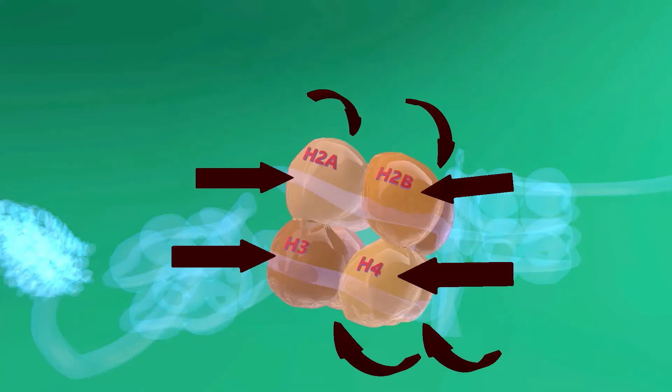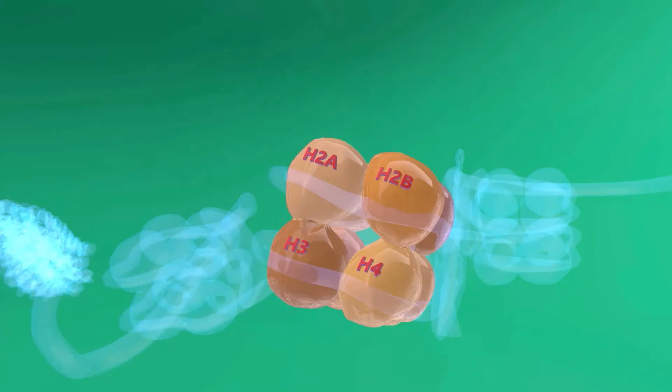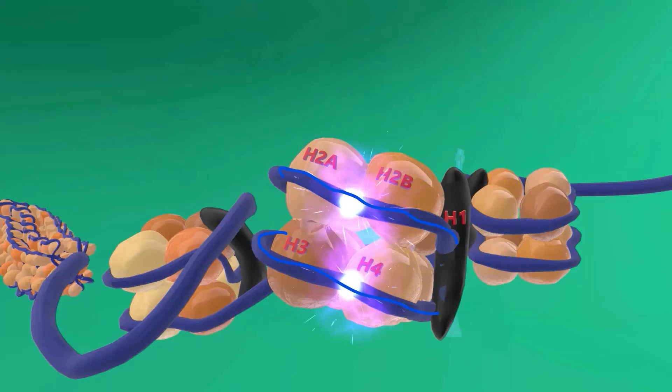What happens is DNA loops about two times around each of these histone octamers, and this is known as a nucleosome.